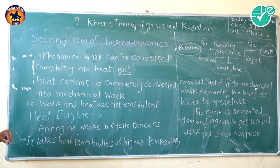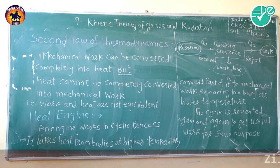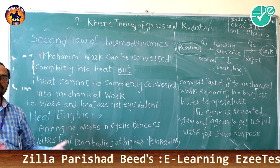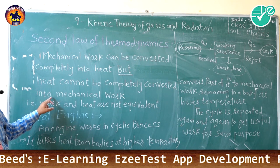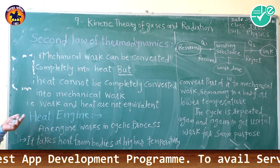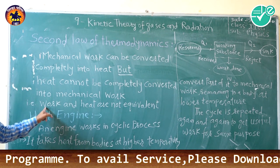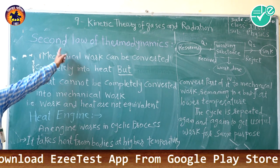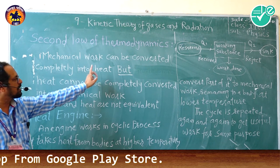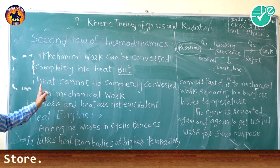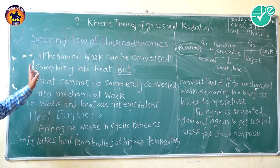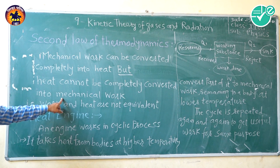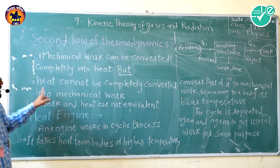As we eat anything, we will get heat from that. But that heat energy cannot be totally converted into our mechanical work. Some amount of the energy will be used for wastage — for that we have to go to the toilet. So the important point we have to understand is that mechanical work can be completely converted into heat, but if heat energy is given to any machine, then the mechanical work output cannot be completely converted — it cannot be 100% from the heat input.